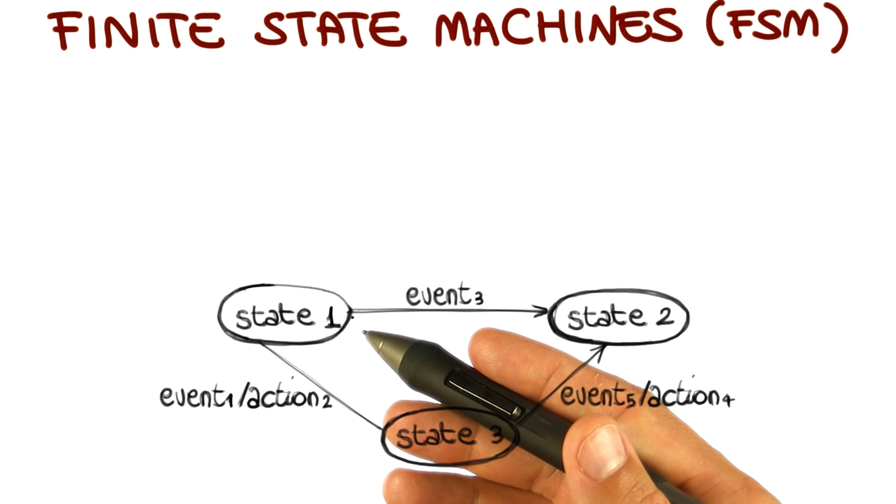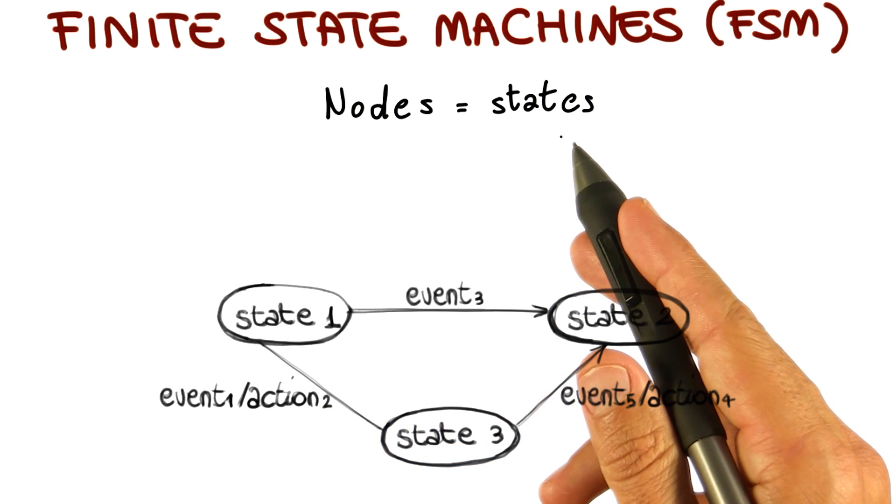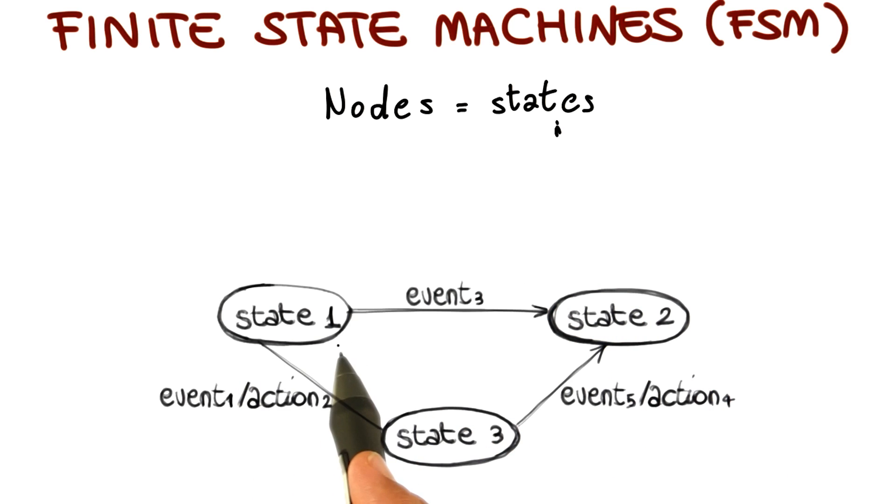At a high level, a state machine is a graph in which nodes represent states of the system. For example, in this case, state one, state two, and state three.